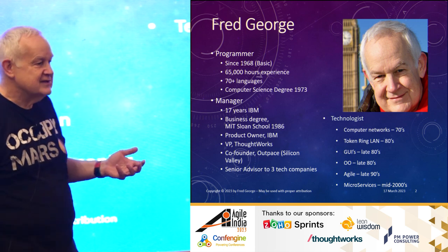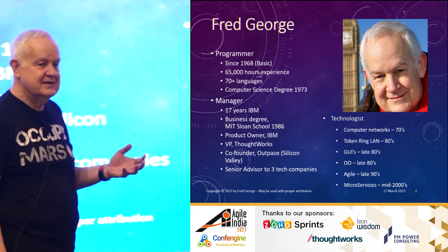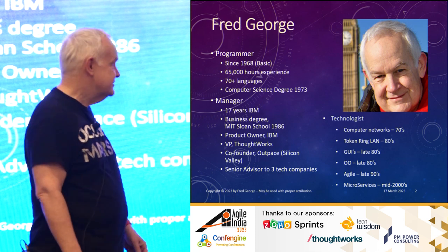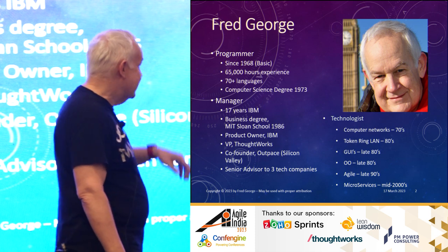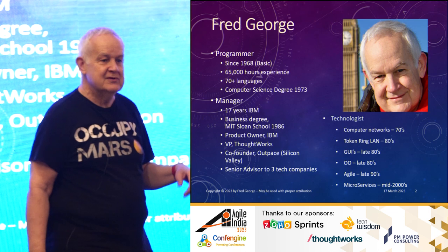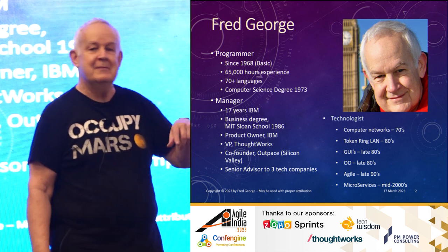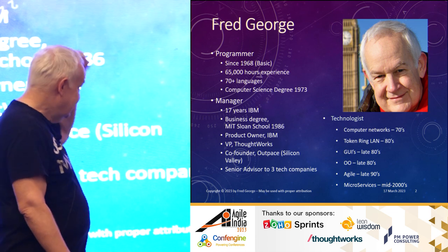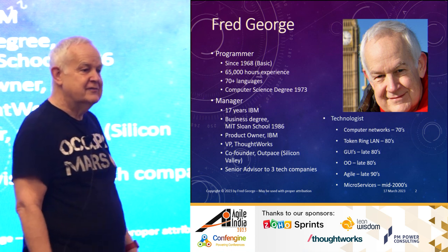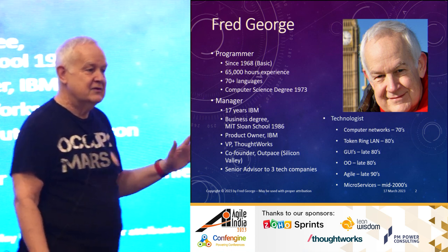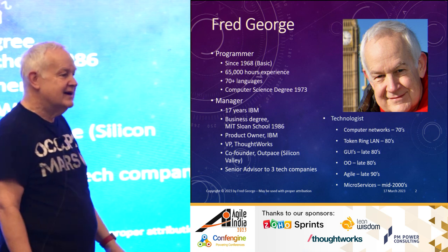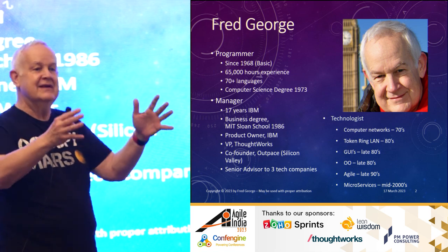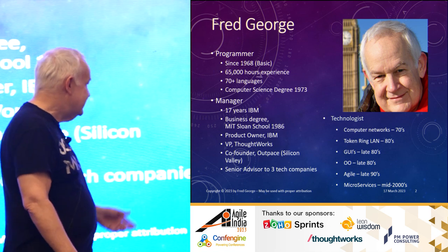A lot of things I talk about in various conference talks are things that you may not know yet, but chances are you'll get there in the next five years. Going way back to computer networks — two computers talking to each other so you can run an application on another computer, that's the 70s. Token ring LANs, GUI interfaces when the world was a green screen world, and why do I have two windows open at the same time? I can only do one thing at a time, so why do I need that?